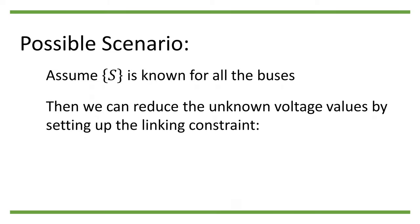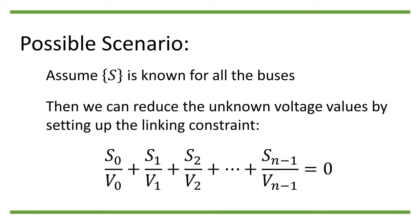To demonstrate this idea, let us consider a possible scenario where the real and reactive powers on all the nodes are known. Then we can reduce the unknown voltage values by setting up the linking constraint s0 divided by v0 plus s1 divided by v1 plus s2 divided by v2 plus dot dot dot plus sn minus 1 divided by vn minus 1 equals 0.